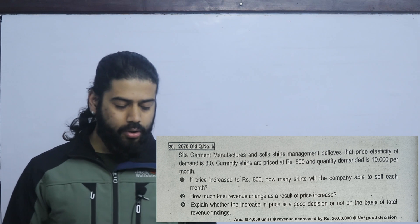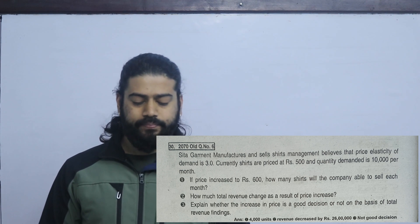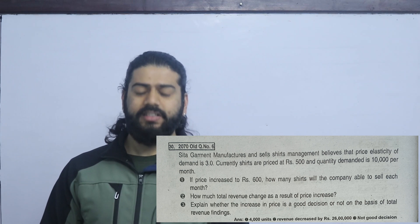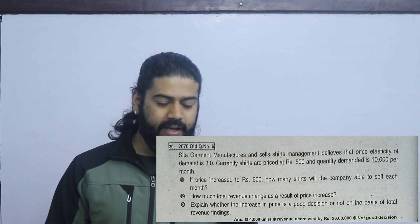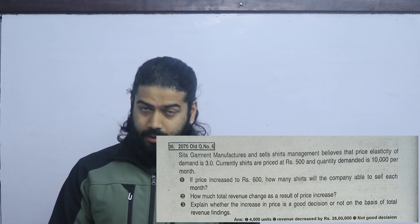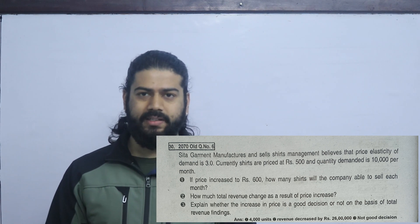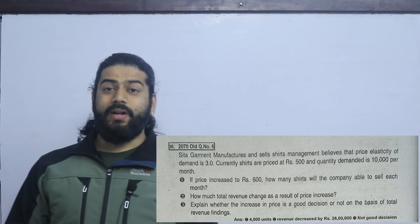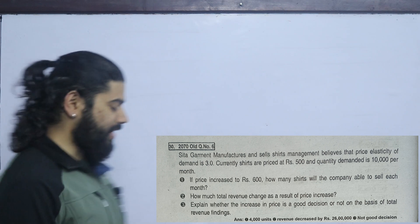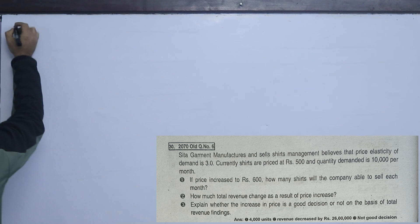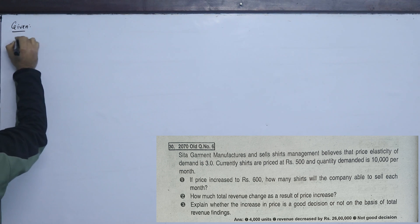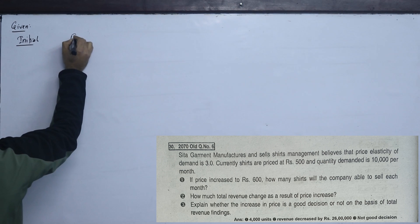Now, what do we do? The price elasticity is 3.0. Price elasticity is negative, so we need to give it a minus sign. The formula — as covered in the previous class — requires us to identify the given values. The initial price will be P1 and the final price will be P2.